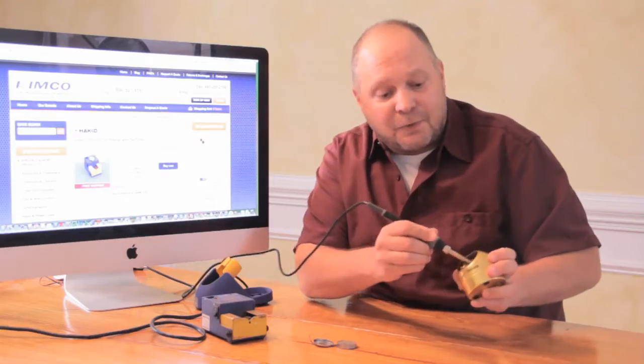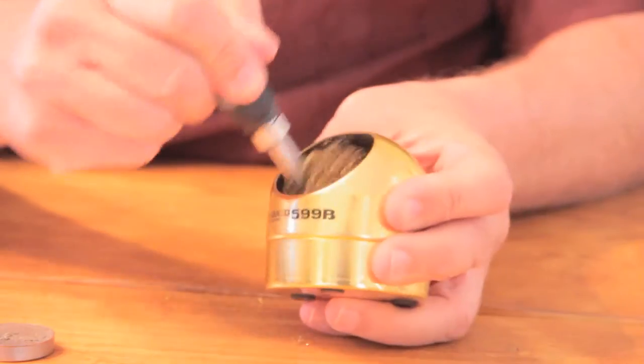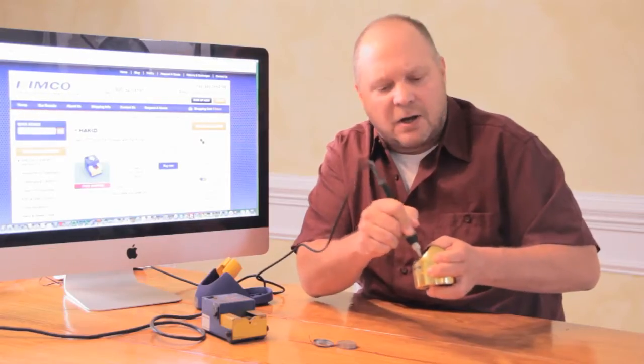With the 599B, it's a brass Brillo that you can take and really get in there and work it and take those oxides off.